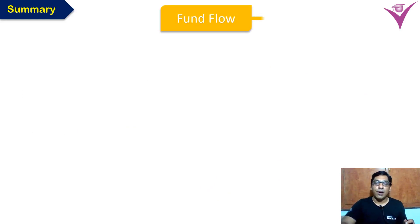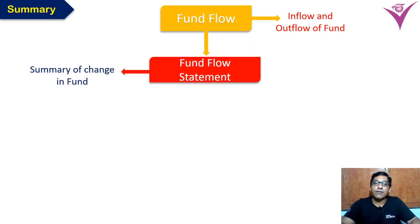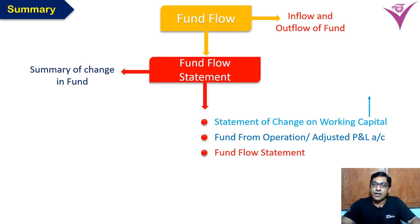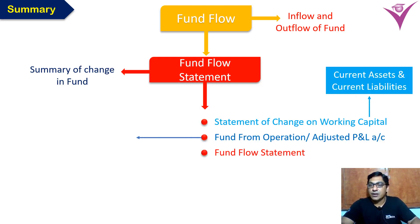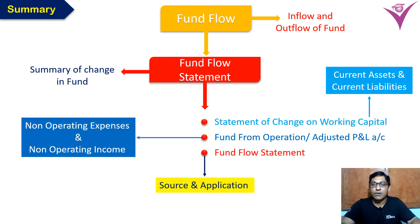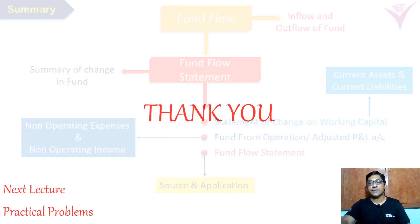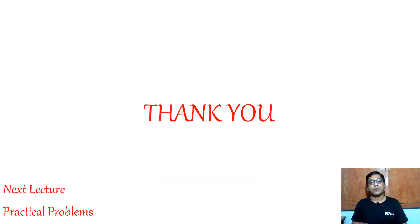This is the summary: fund flow statement shows the inflow and outflow of fund — a summary of change in fund. Three statements are prepared: current assets and current liabilities go into working capital; non-operating expenses and income go into fund from operations; and sources and applications go into the fund flow statement. Hope you all understood. Thank you so much. In the next lecture we proceed with the practical problems of fund flow statements.